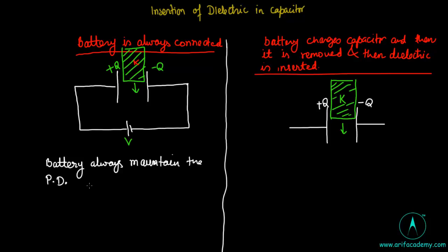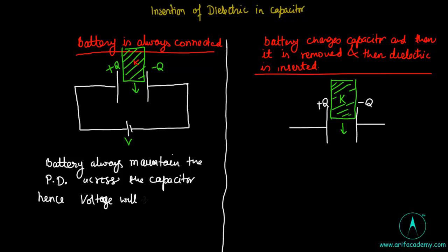When the battery is always connected, it maintains a constant potential difference across the capacitor at all times. Everything else may change, but the potential difference across the capacitor will not change. On the right side case, the charge given to the capacitor will not change because the battery is not connected, so charge on the capacitor will be the same before and after insertion.